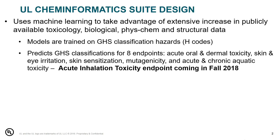Our models predict GHS classifications, and currently we have models for eight different endpoints: acute oral, acute dermal toxicity, skin and eye irritation, skin sensitization, mutagenicity, and acute and chronic aquatic toxicity. In the near future we're going to be adding an acute inhalation toxicity endpoint, which should be coming in the fall of 2018 at the end of September.